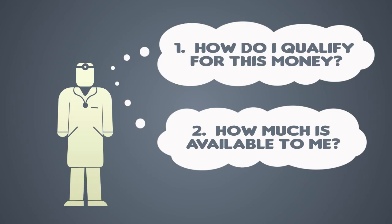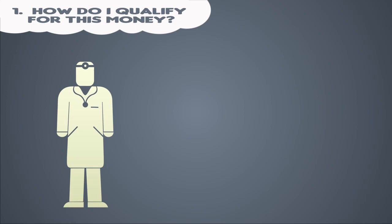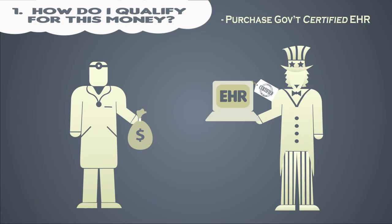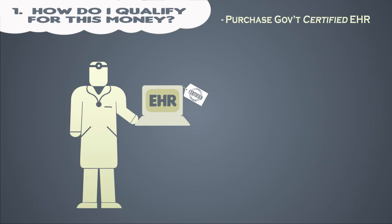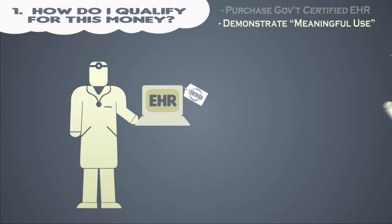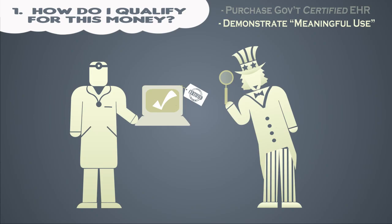To qualify for a piece of the HITECH money, there are two things you will need to do. First, your practice must purchase and use a government-certified EHR. Secondly, your practice will need to demonstrate meaningful use of this EHR. This means that you will have to prove to the government that the EHR is being properly implemented according to their criteria.